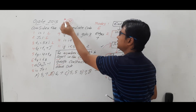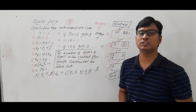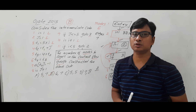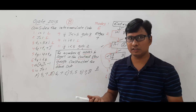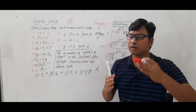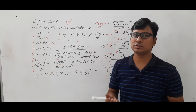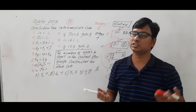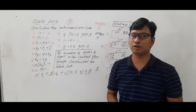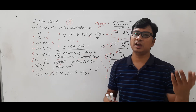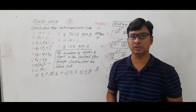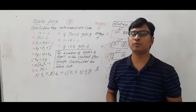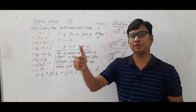The number of nodes is 6 and number of edges is 7, so the right answer for this question is option B. I hope you understood how I solved this question. If you have any doubts, feel free to ask in the comment section and I will clear your doubts as early as possible. Thank you for watching the complete video — have a nice day.